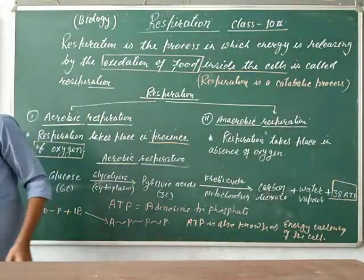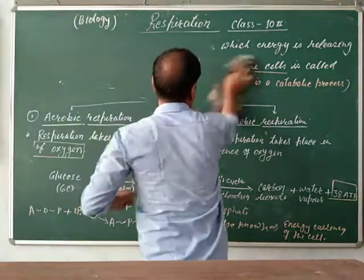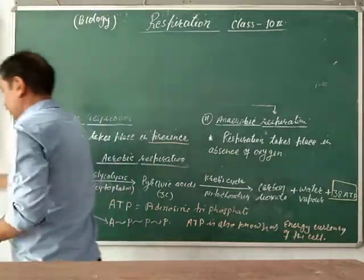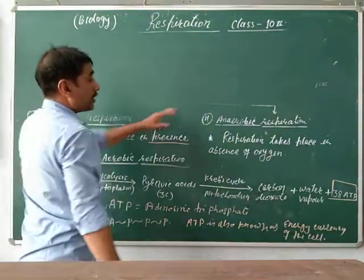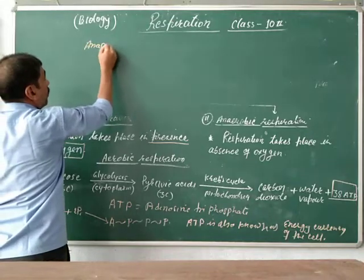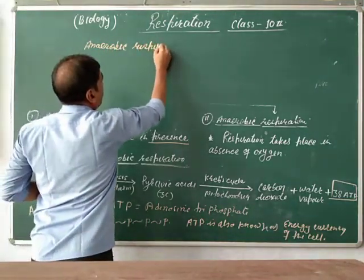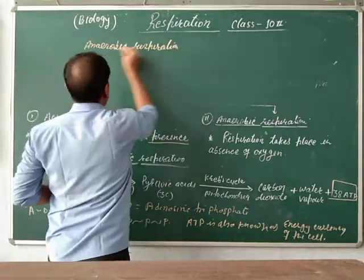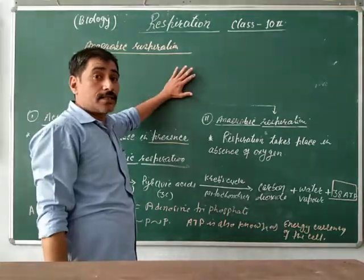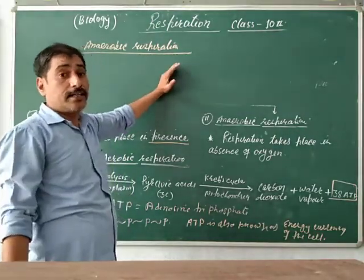Now let us learn about anaerobic respiration — respiration in the absence of oxygen. Anaerobic respiration happens in two cases: first, it is done by yeast, and second, in the muscle cells.